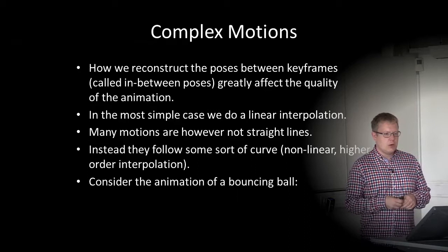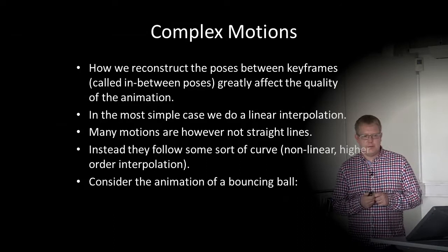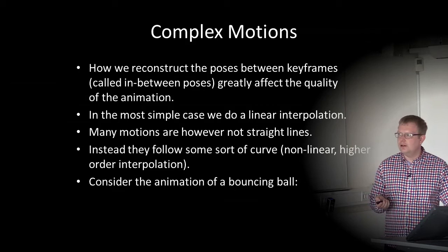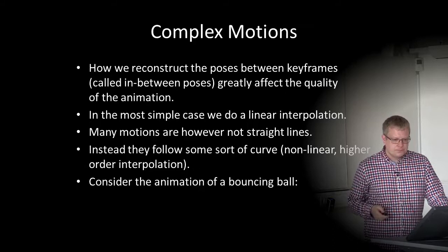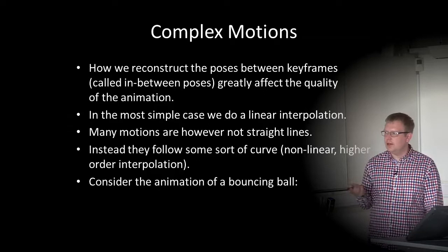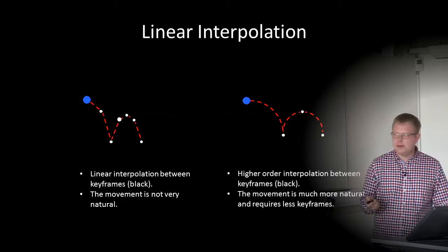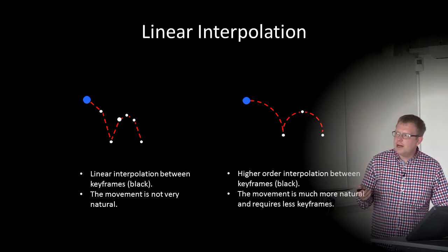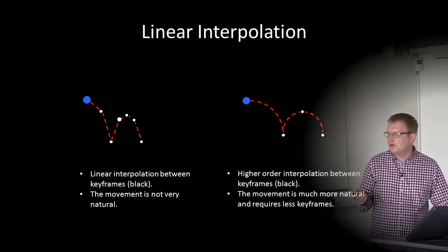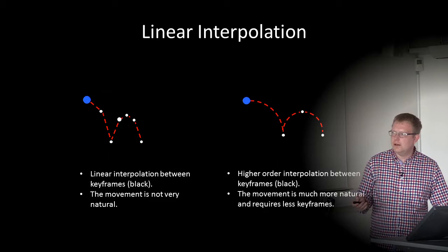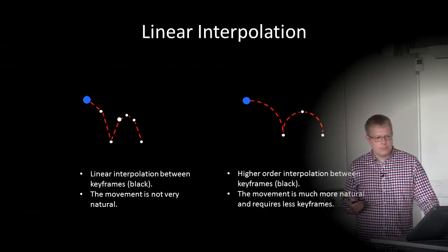We can also have complex motions. How we reconstruct poses between keyframes — called in-between poses — greatly affects animation quality. In the most simple case we can do linear interpolation, but many motions are not straight lines. Consider the animation of a bouncing ball: linear interpolation between keyframes produces unnatural straight-line movements that suddenly turn, looking very weird.